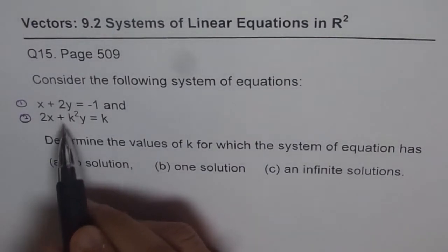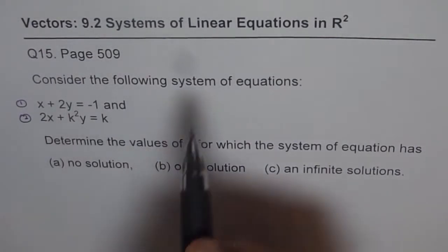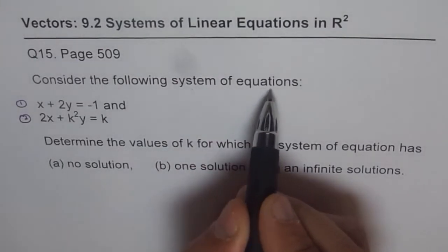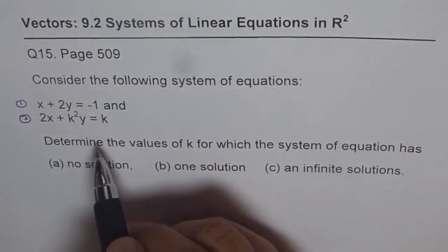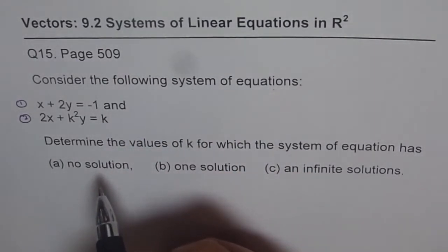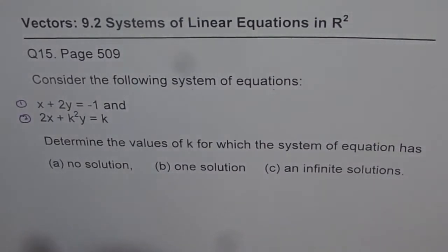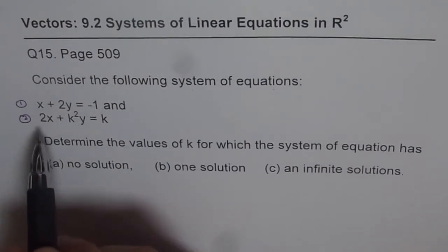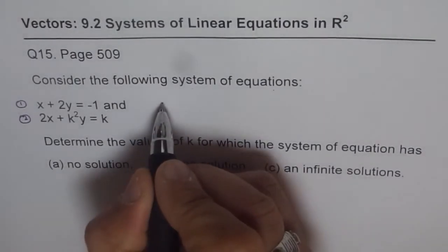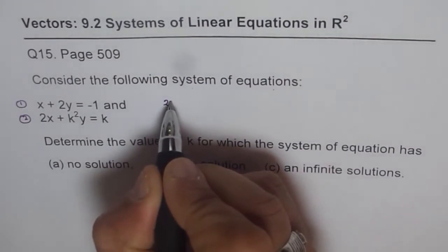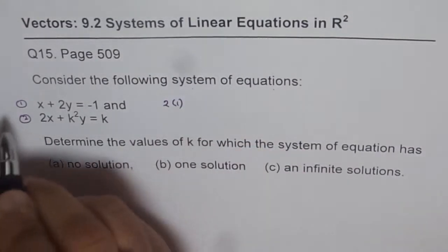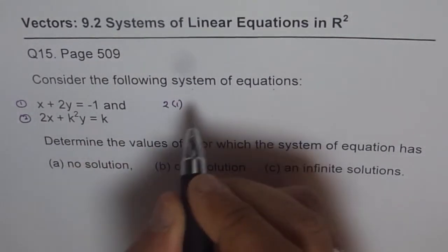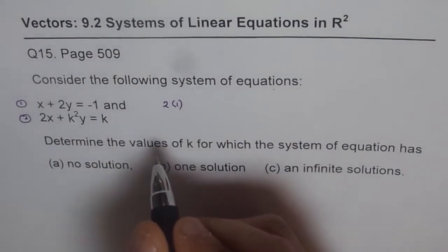Now adopt the method of elimination. Whenever we are talking about system of equations, that means more than one, here we have two equations. So you have to do substitution or elimination and then figure out what is the solution. So to eliminate x, what we should do is multiply equation number 1 by 2, and then take away equation number 2 from it, for example.